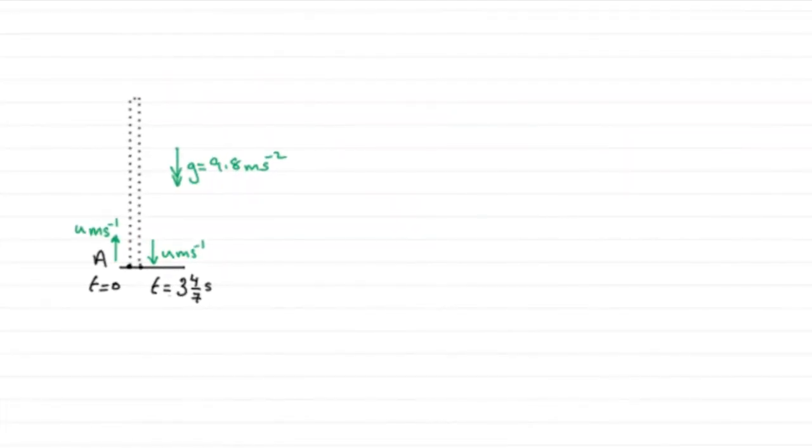Now for this next part, we've got to work out the greatest height above reached by the stone. So it's going to be obviously this distance here. I'm going to call that H, so just mark that in as H. And to do this, we're going to use some SUVAT-based equations, so just writing my variables down here again.